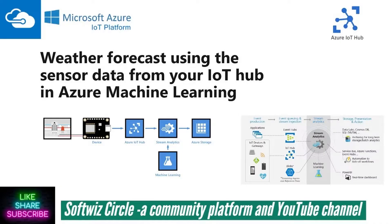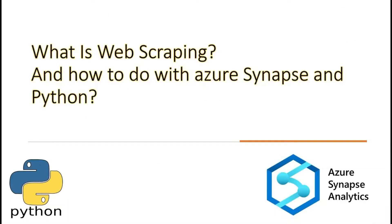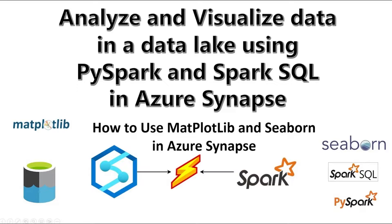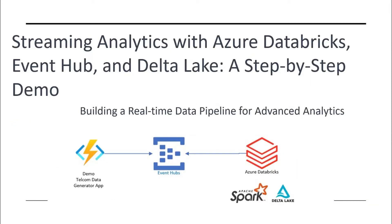In the fraud detection demo, data comes from IoT devices and is ingested into IoT Hub. On top of that, we run machine learning to forecast weather. The web scraping video covers how to use different open source libraries inside Azure Synapse Analytics and Spark pool — nowadays in the large language model world we do a lot of scraping because we need data to train models.